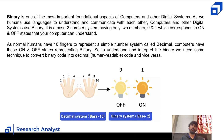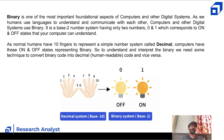As humans we have 10 fingers to represent a simple number system called decimal, while computers have on and off states representing binary. To communicate with a computer, your code may have normal numbers, but the computer converts them to binary internally. When it returns a result, it converts back to decimal so that we as humans can understand. We need a technique to do this conversion.